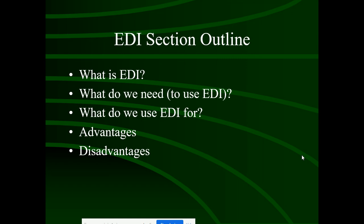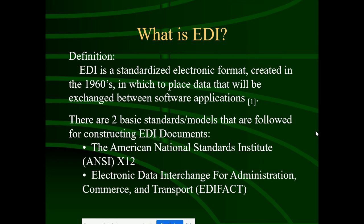So what is EDI? EDI is Electronic Data Interchange, which is a standardized format created in the 1960s in which data can be exchanged between two companies — from one business to another — by software applications and business processes.